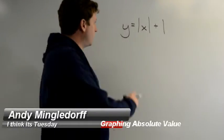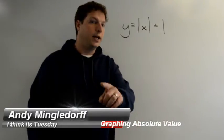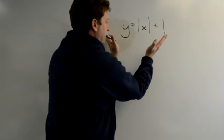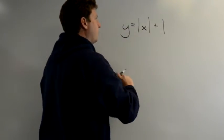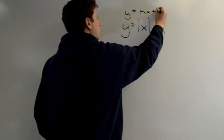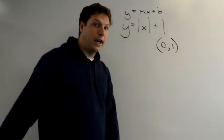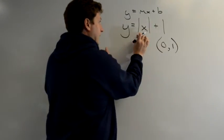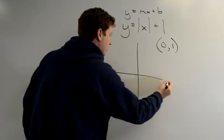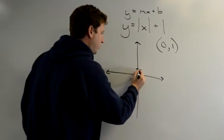We're going to try to graph y equals the absolute value of x plus 1. So what is this plus 1? We looked at y equals the absolute value of x and we know it's a V. Well, this plus 1 — if you remember, slope-intercept form is telling me that this is the y-intercept, and I know that the absolute value of x is my V-shape. So what this has done is move the entire graph up 1.